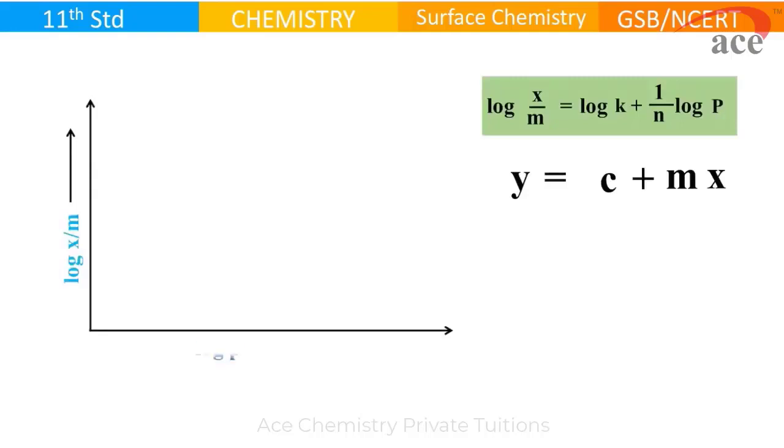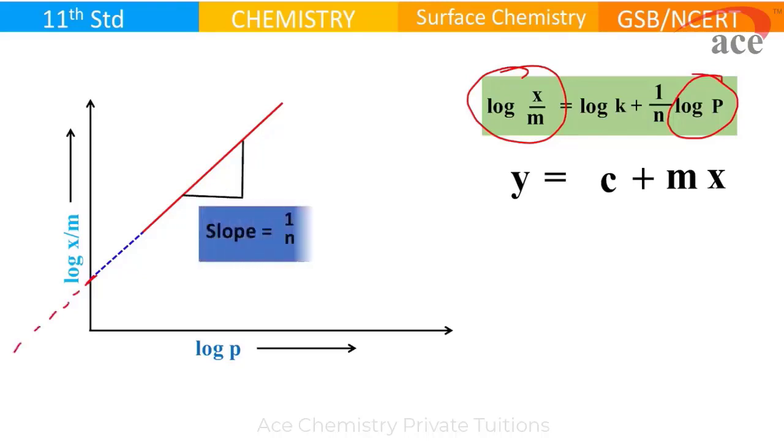So we plot a graph of log x by m versus log P. We get a straight line not passing through origin, but cutting the y-axis. When we extrapolate this line, we get value log k.